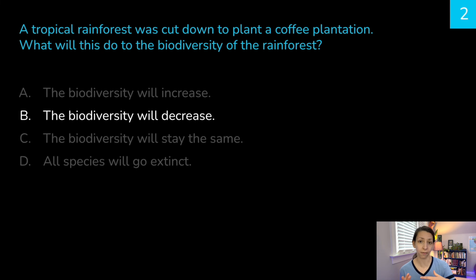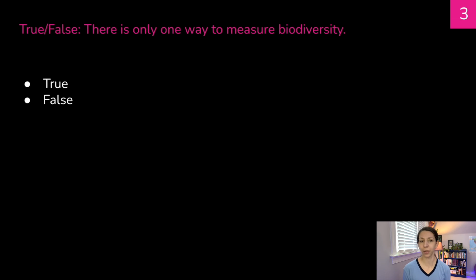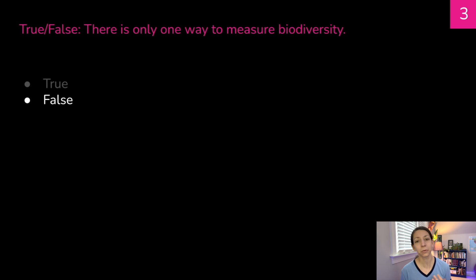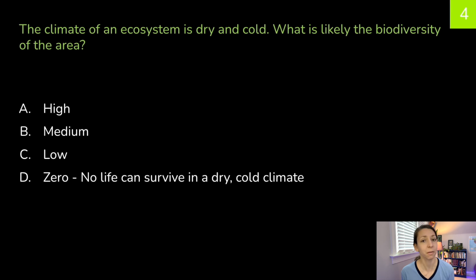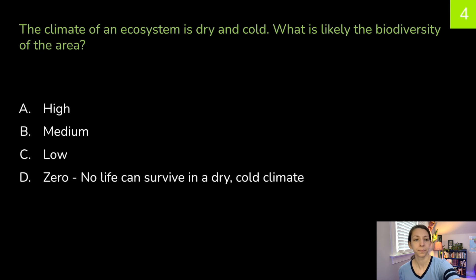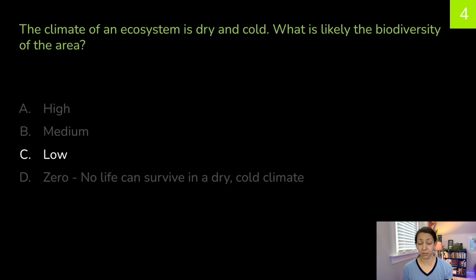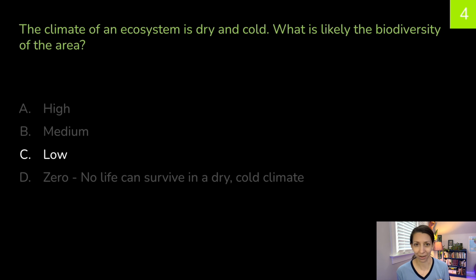The correct answer is b) the biodiversity will decrease. Even if the number of plant species stayed the same, there are fewer components in the ecosystem overall. Question three: true or false — there is only one way to measure biodiversity. Correct answer: false. There are many ways to measure biodiversity depending on what you're looking for. Question four: the climate of an ecosystem is dry and cold — what is likely the biodiversity? a) high, b) medium, c) low, or d) zero. The correct answer is c) low. Wetter, warmer environments have higher biodiversity than colder, drier ones.